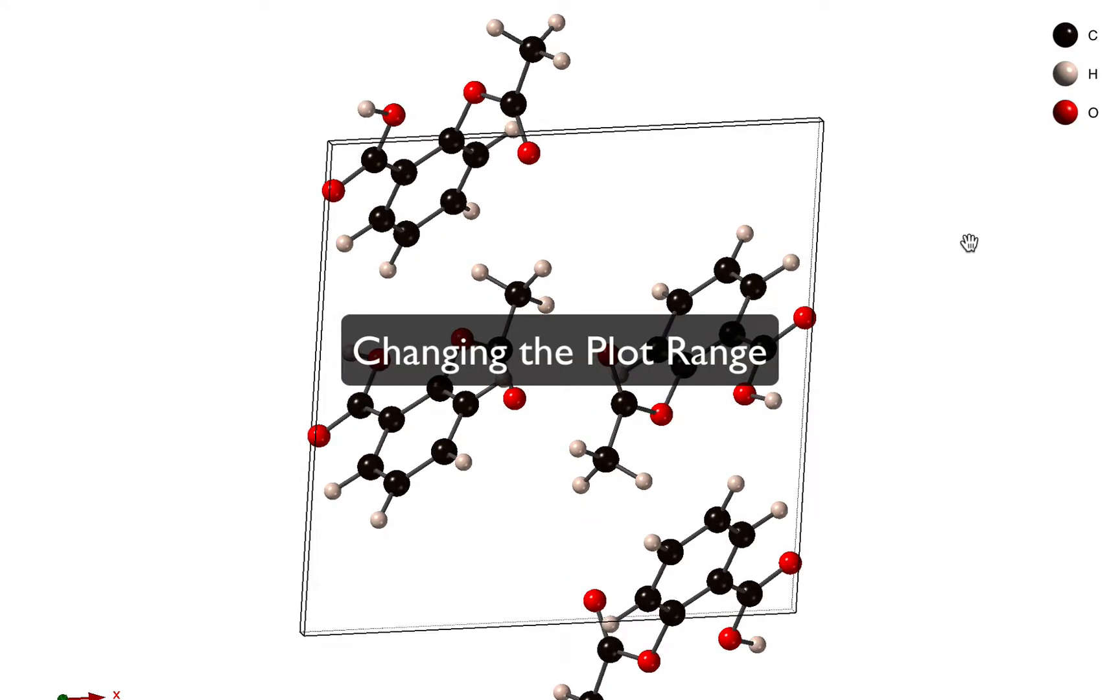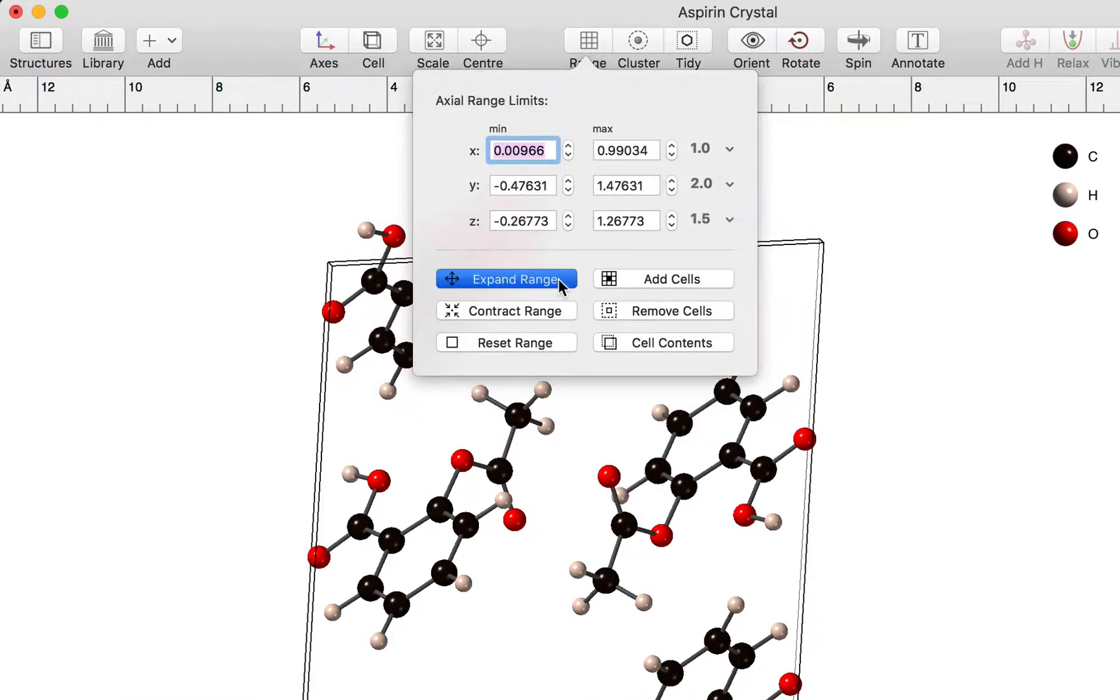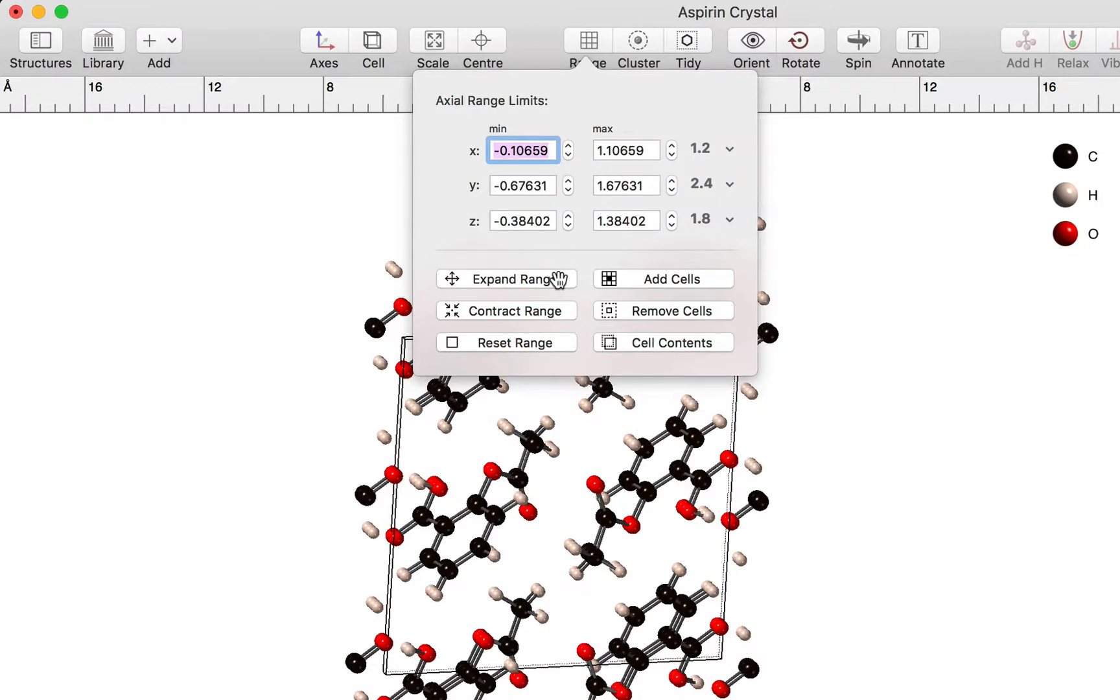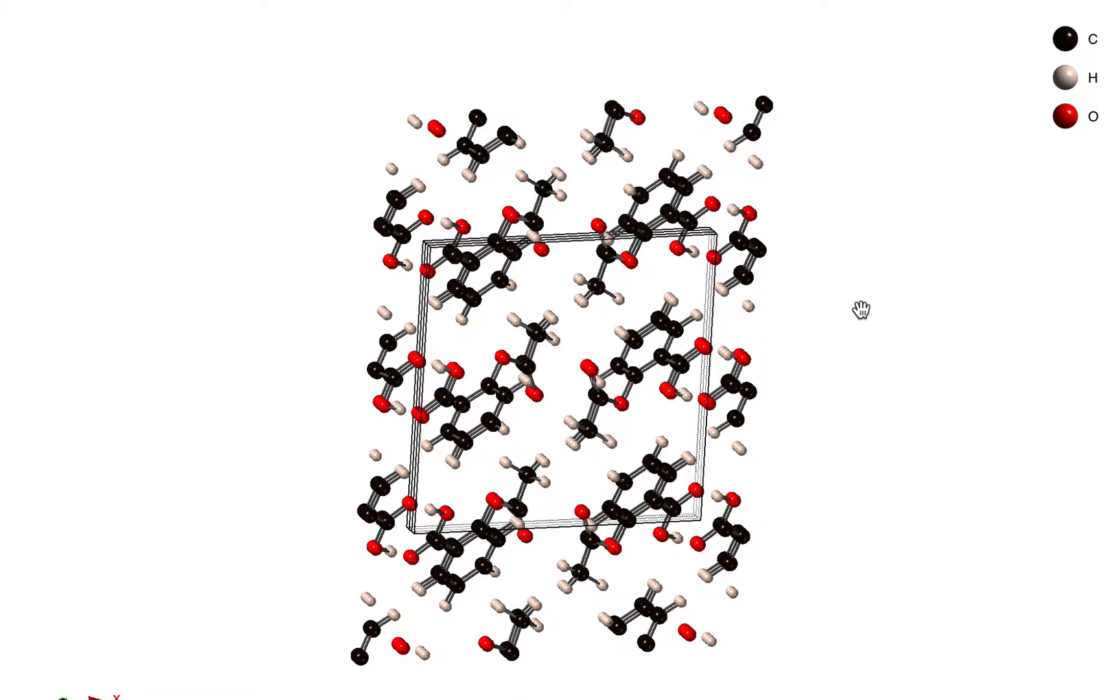Now what happens if you want to display more of the structure? You can do that using the range command. We can expand the range, and when we do this we're displaying all atoms that lie within a box whose shape is the same as that of the unit cell. Obviously as you expand the range you're going to end up with fragments of new molecules.